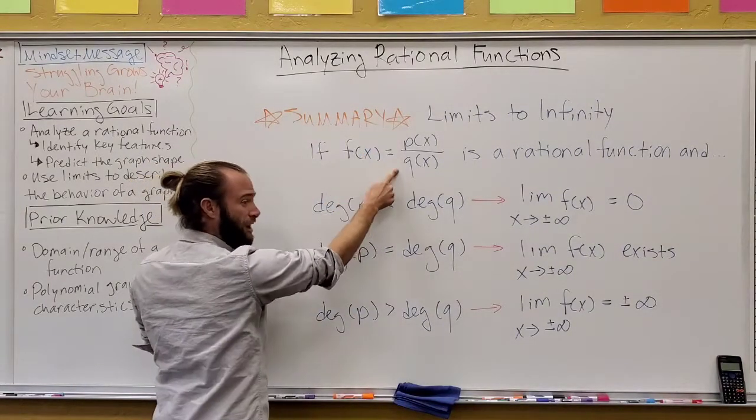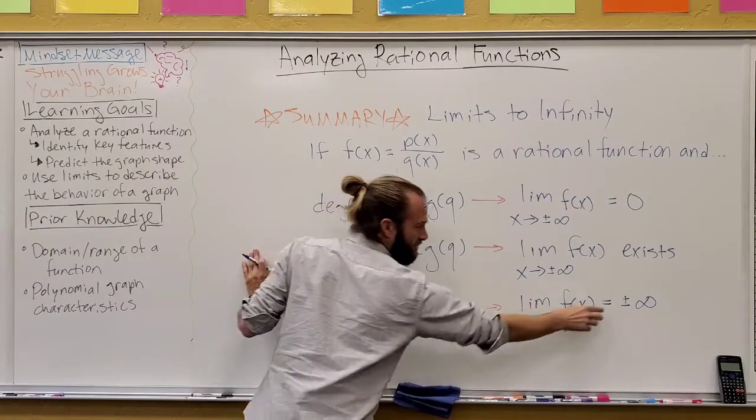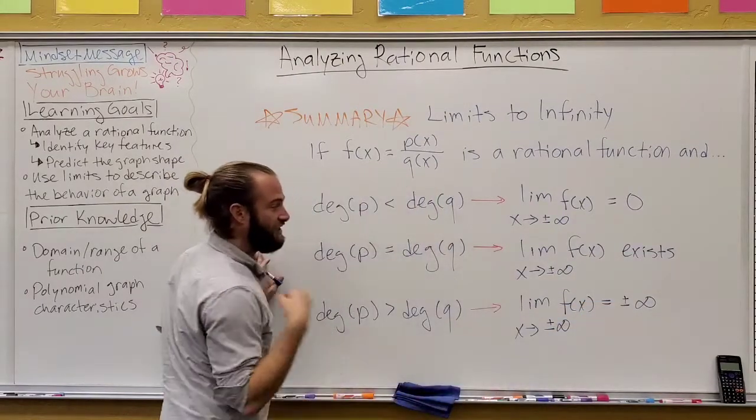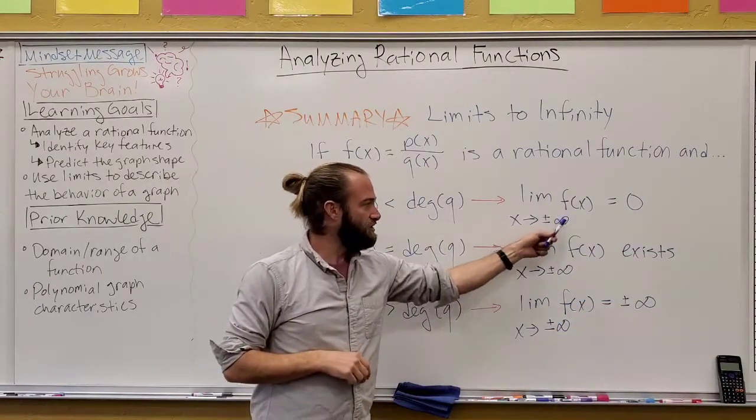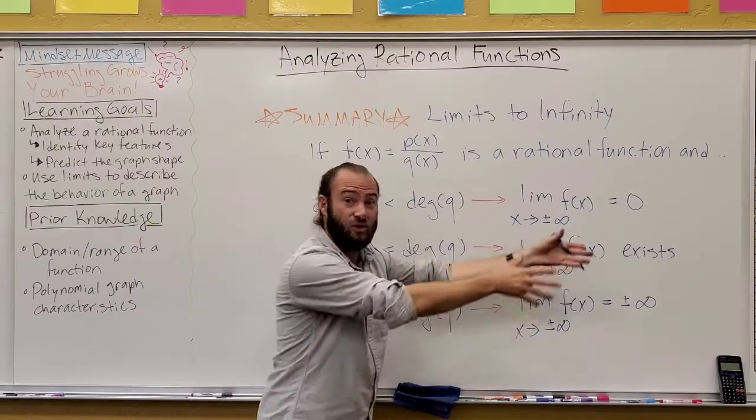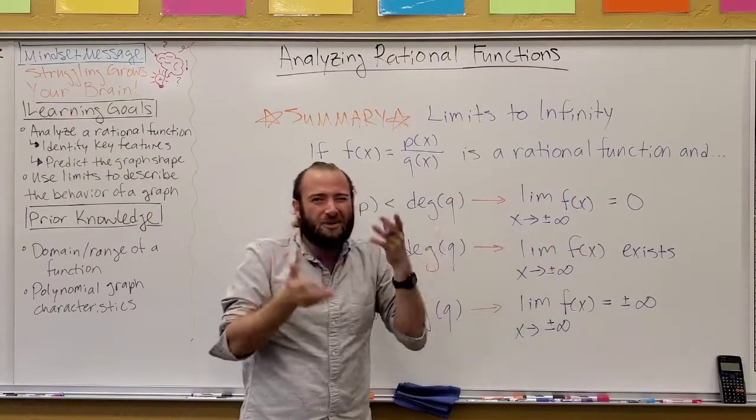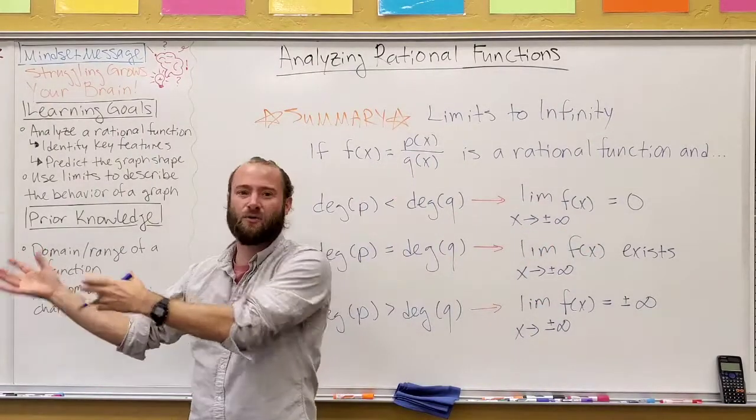If the degree of the top is greater than the bottom, as we just saw, it's either going to go to positive or negative infinity. And remember, we only looked at positive infinity, letting x grow positively infinitely, but the same concepts apply if you let it go backwards infinitely.